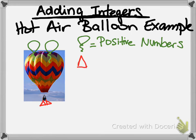On the other side, if we added weights to the bottom of our balloon, it would make it heavier, which would then pull our balloon down. So those are going to be our negative numbers.